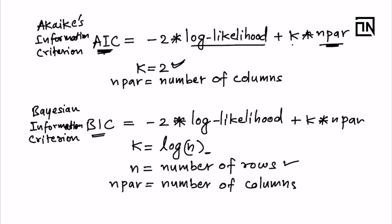So that is the only difference between AIC and BIC: the value of k which you use here. This k is slightly different. In BIC it is the log of number of rows, and in AIC it is 2. Number of parameters which you multiply is same in both—it is the number of columns.